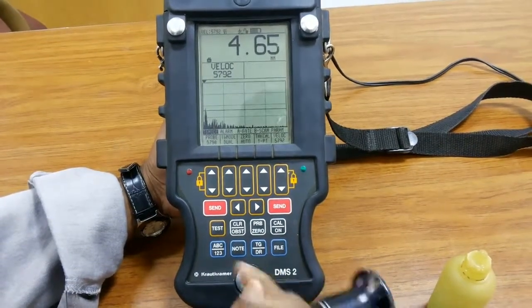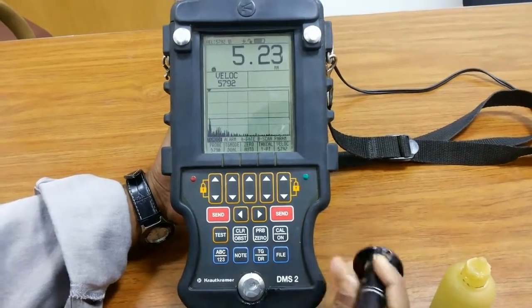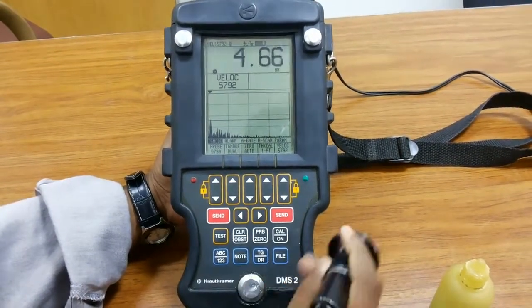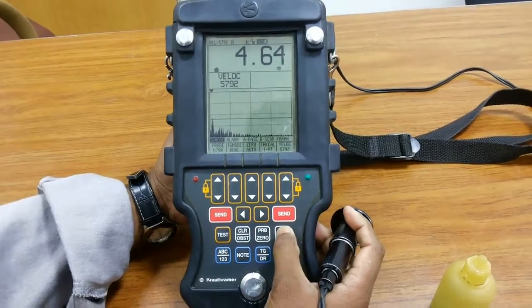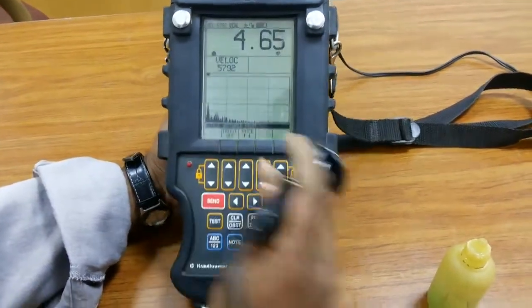This is a 6.5mm SS calibration block. Put it on CAL mode. It will show 'please couple probe.'